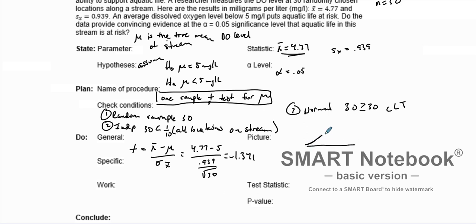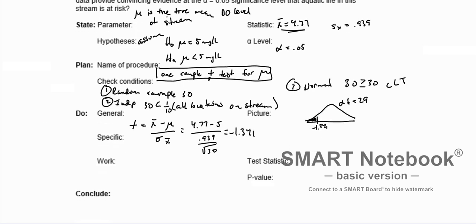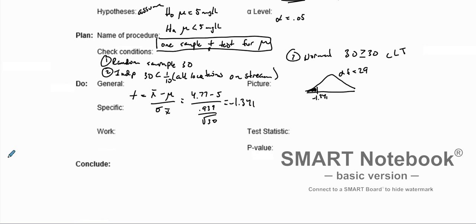We get a value of approximately negative 1.341. Our degrees of freedom will be 29. We take this value of negative 1.341 and we're trying to find the area in the lower tail. We can go to Table B or use the calculator with tcdf from negative 100 to negative 1.341 with degrees of freedom 29. I found our p-value to be approximately 0.0951.